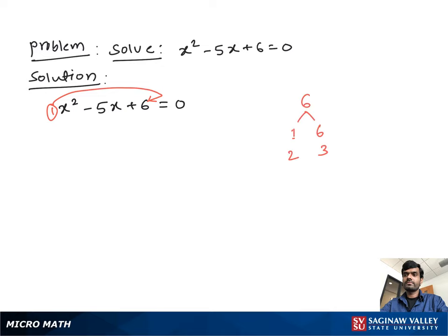Now we find a pair of numbers which when multiplied give us positive 6 and when added give us negative 5. That number is minus 2 and minus 3.